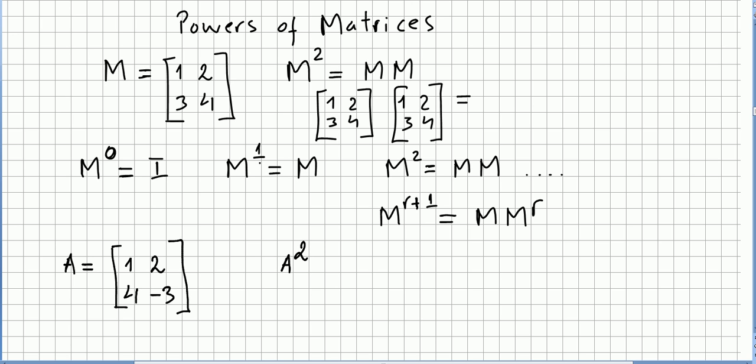A matrix to the power of 1 is the matrix itself. So M to the power of 2, as we have seen here, is M times M. And M to the power of r plus 1 is the same as M times M to the power of r.